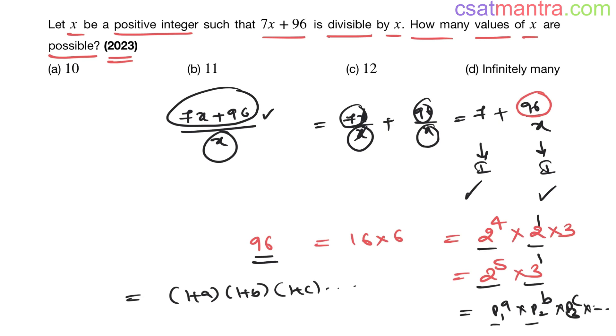So 1 plus a is 6, 1 plus b is 2. So 6 into 2 equals 12. 12 possibilities of x are there. Answer is c.